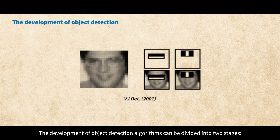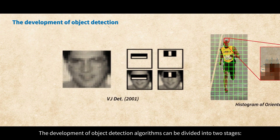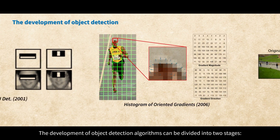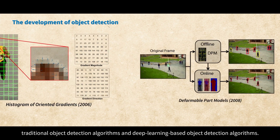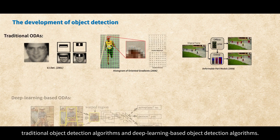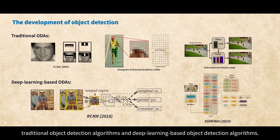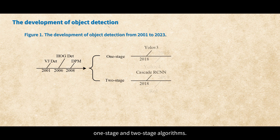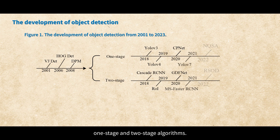The development of object detection algorithms can be divided into two stages: traditional object detection algorithms and deep learning-based object detection algorithms. Deep learning-based object detection algorithms are further divided into two main technical routes: one-stage and two-stage algorithms.